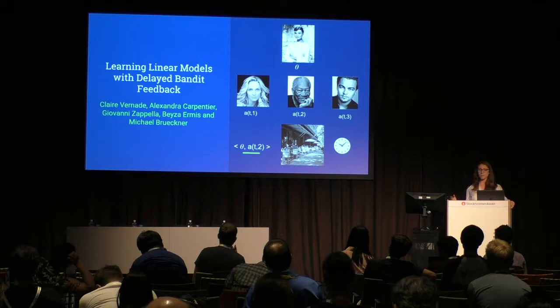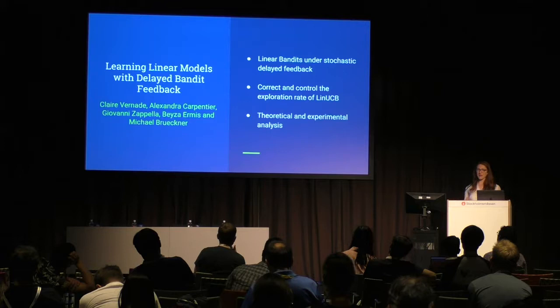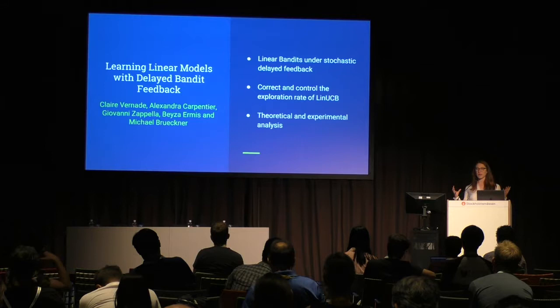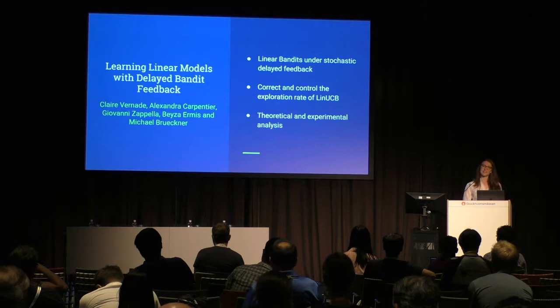In the setting of linear bandits, Audrey wants to estimate her parameter theta that controls her reward function. But she cannot do it due to the bias that comes from the censored observations — censored by the delay and the conversion window. In this work, we suggest a new way of doing linear bandits under delayed feedback and analyze the new exploration function needed to handle this bias. Please visit poster number eight for details.